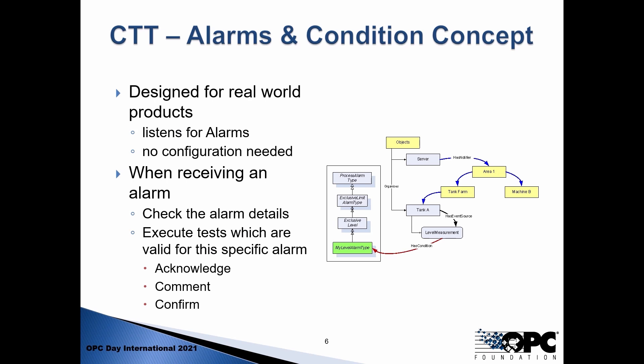The way we are testing alarms is slightly different than other tests. Those test cases and scripts are designed for real-world products, so we don't expect to write values to trigger alarms — because for a temperature sensor it is unlikely that we can actually write to the temperature value. The beauty of that is because we're just listening for alarms, there's no configuration needed, at least not for the conformance units currently shipped. There will be some minor configuration needed for the following set. The way it works is we basically listen for an alarm and once we receive it, we check whether all the alarm detail fields are present that we are looking for.